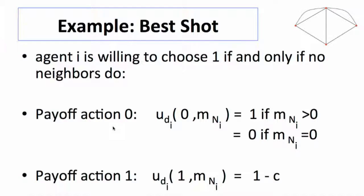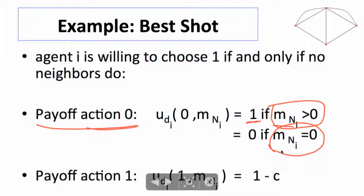I'm willing to buy the book if and only if none of my neighbors do. So, for instance, if I don't buy the book, what's my payoff? My payoff is one if one of my neighbors buys the book. If the number of neighbors who bought the book is positive, I can borrow it from them. I get a payoff of one. If none of my neighbors bought the book, I can't borrow it. I get a payoff of zero. I didn't buy it. Now, instead, I could buy it myself. And if I end up buying the book myself, then what do I end up with? I end up with a payoff of one minus C, where C is the cost of the book.